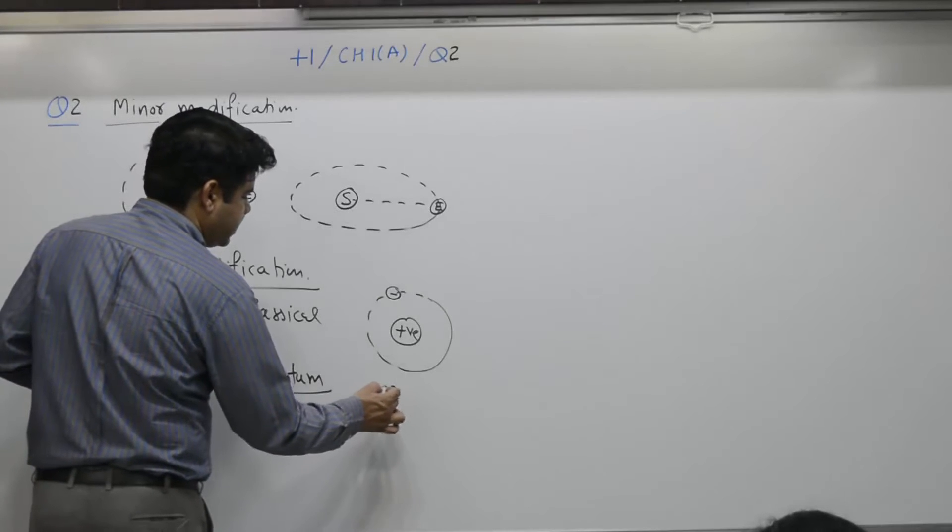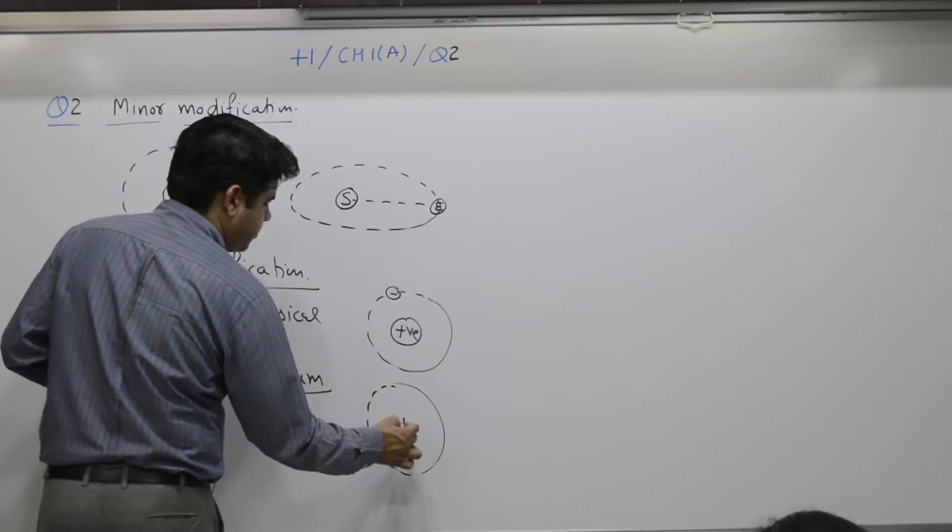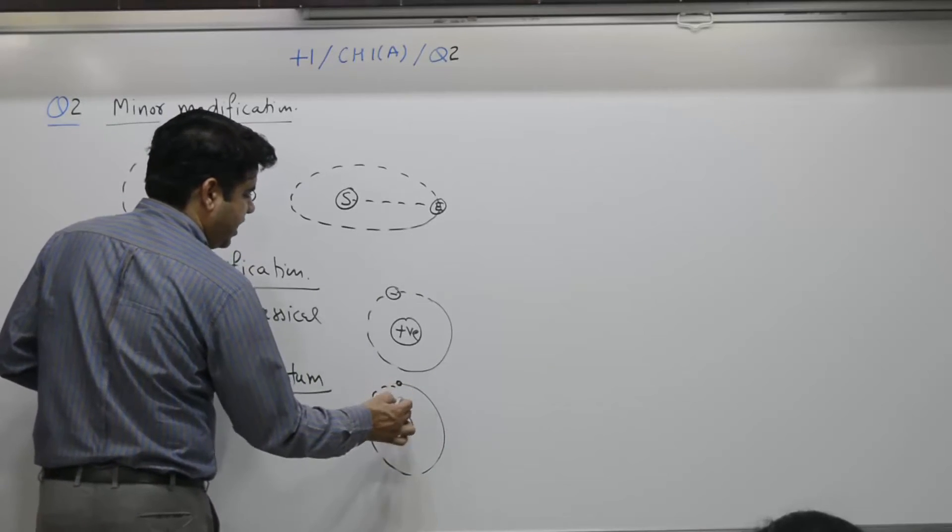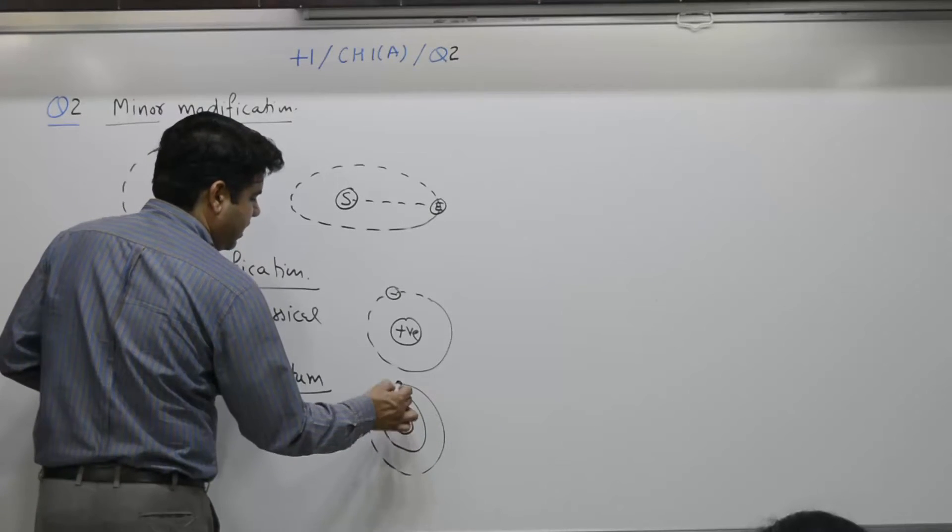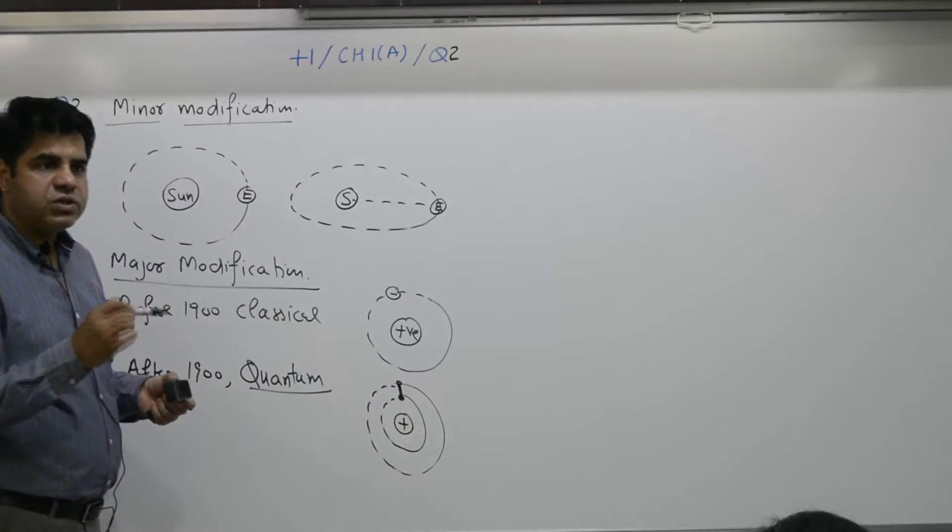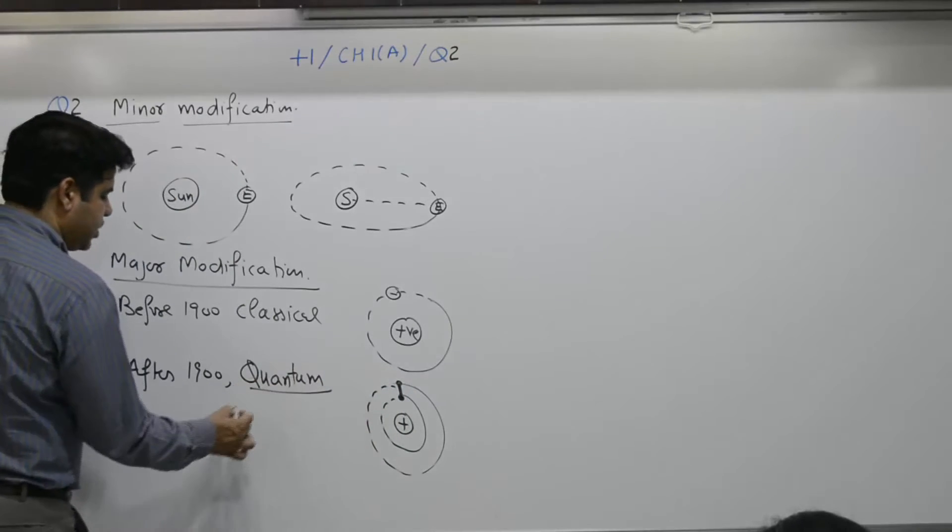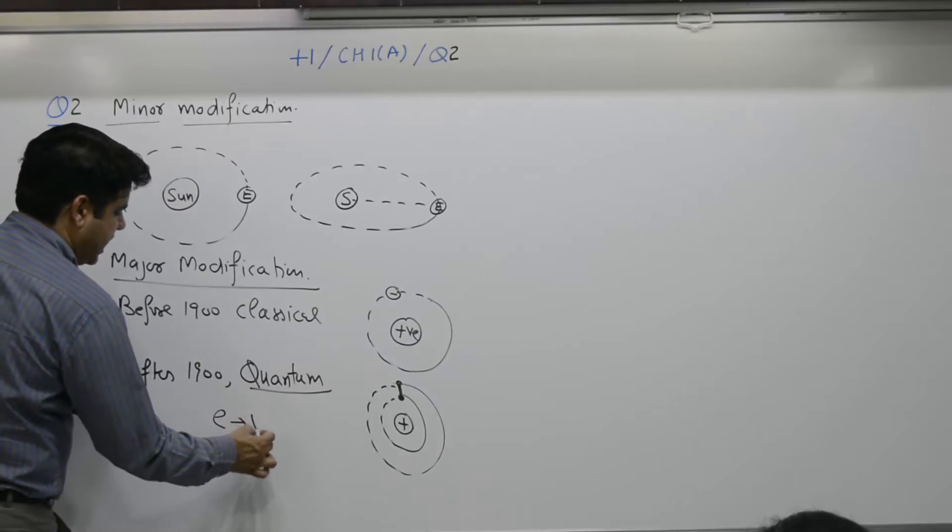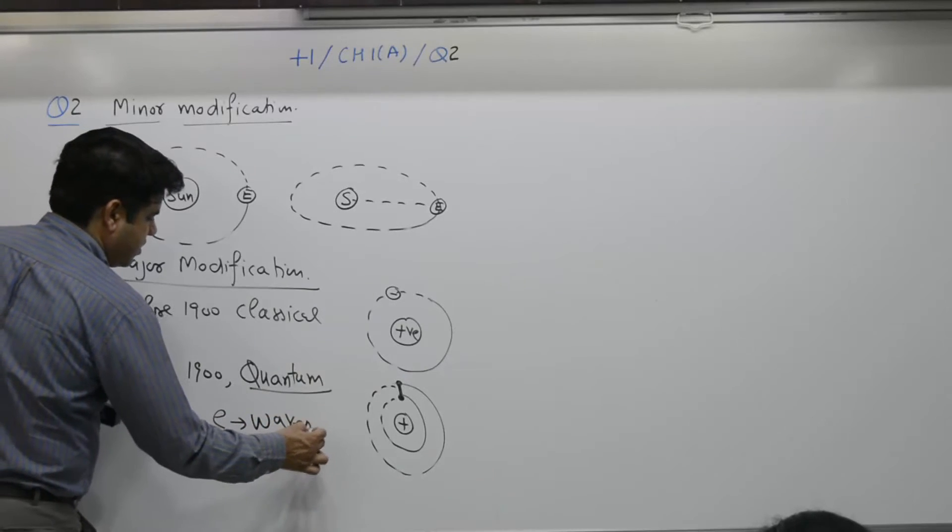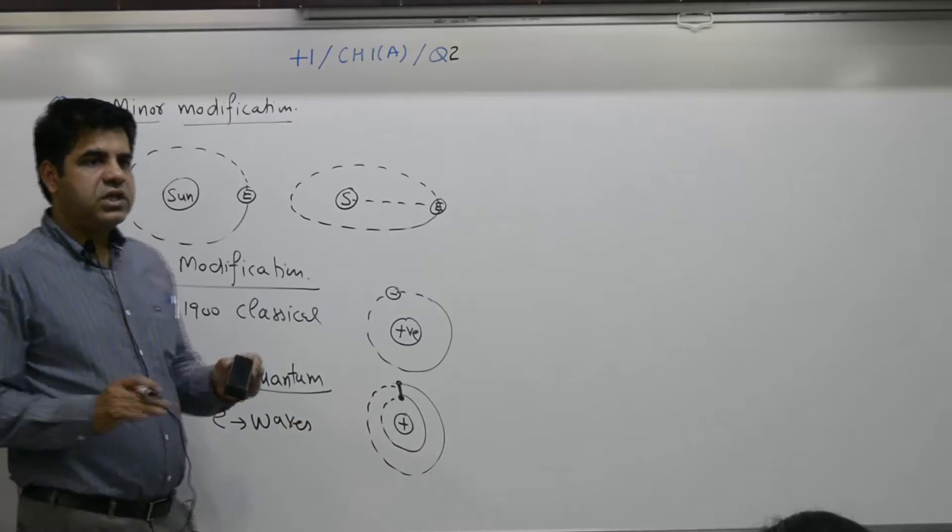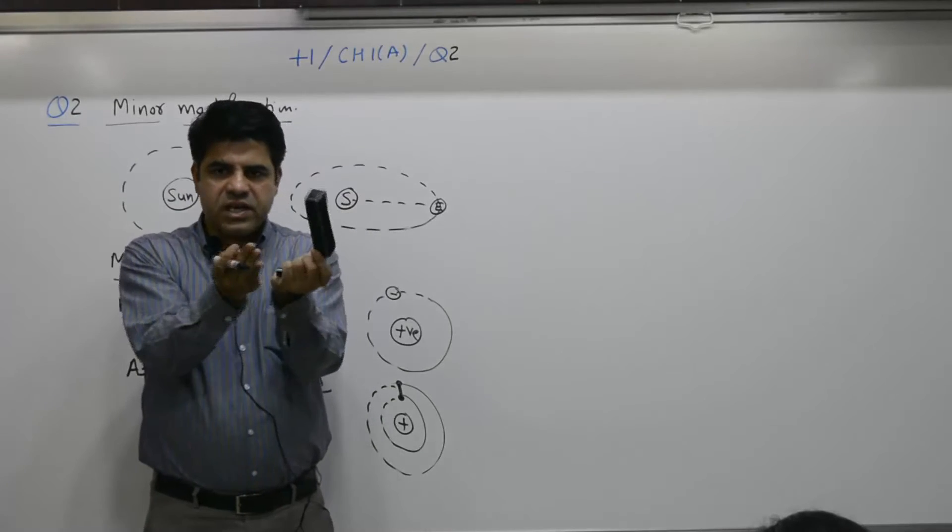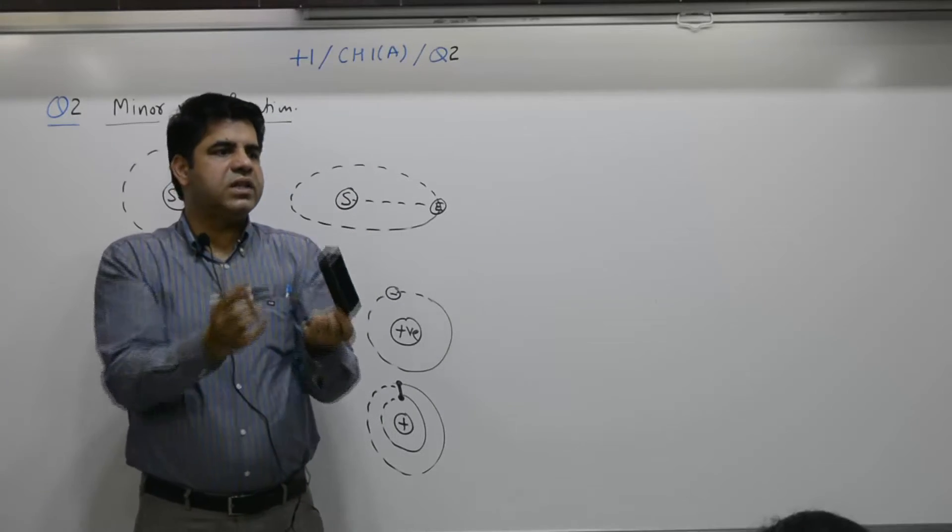Which says electron, when it jumps from higher level to lower level, it can jump only certain levels: second to first, third to second, third to first, certain jumps only - quantum. And electron waves, that means electron is just like a wave, it is just like a cloud surrounding the nucleus.